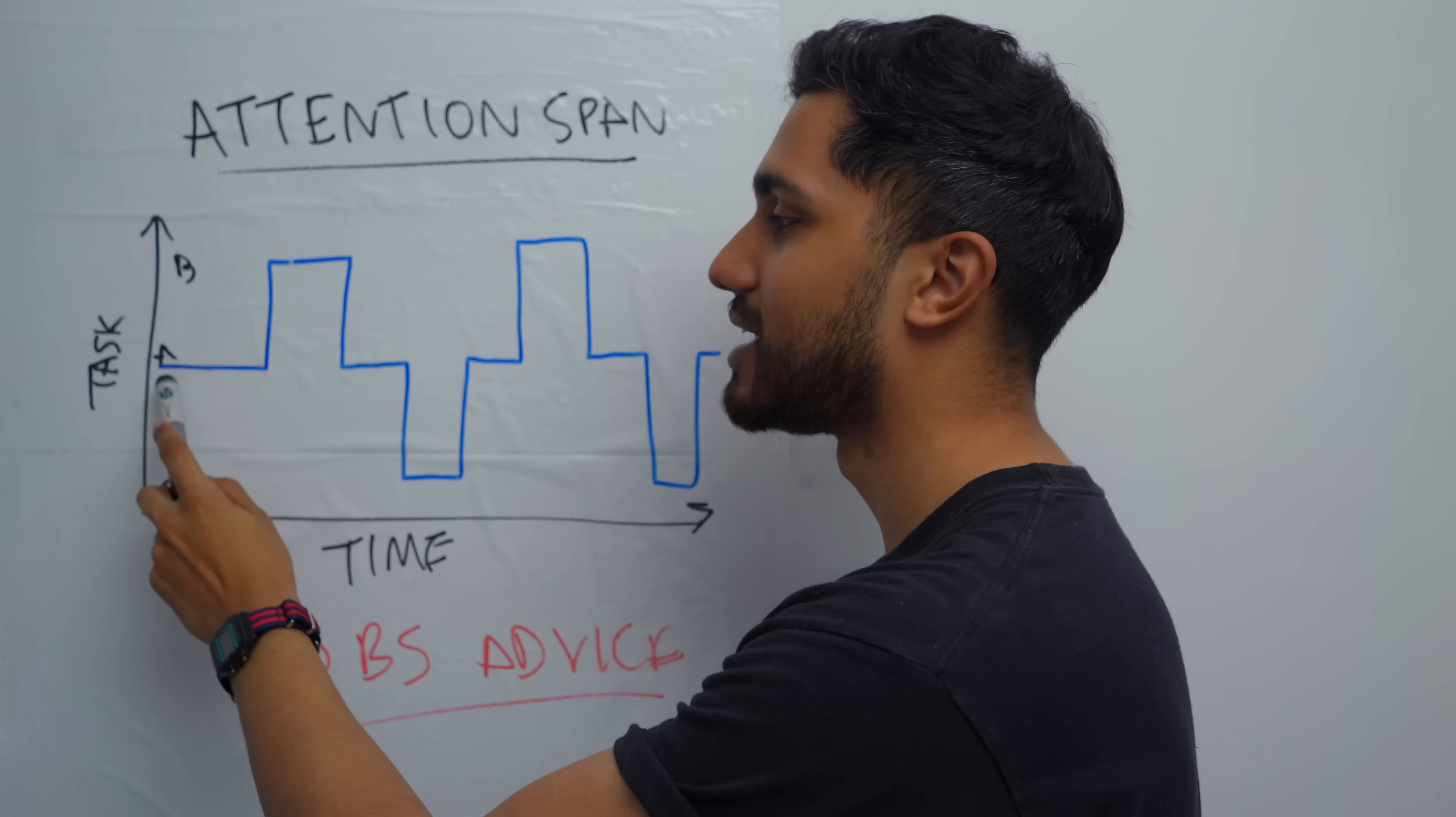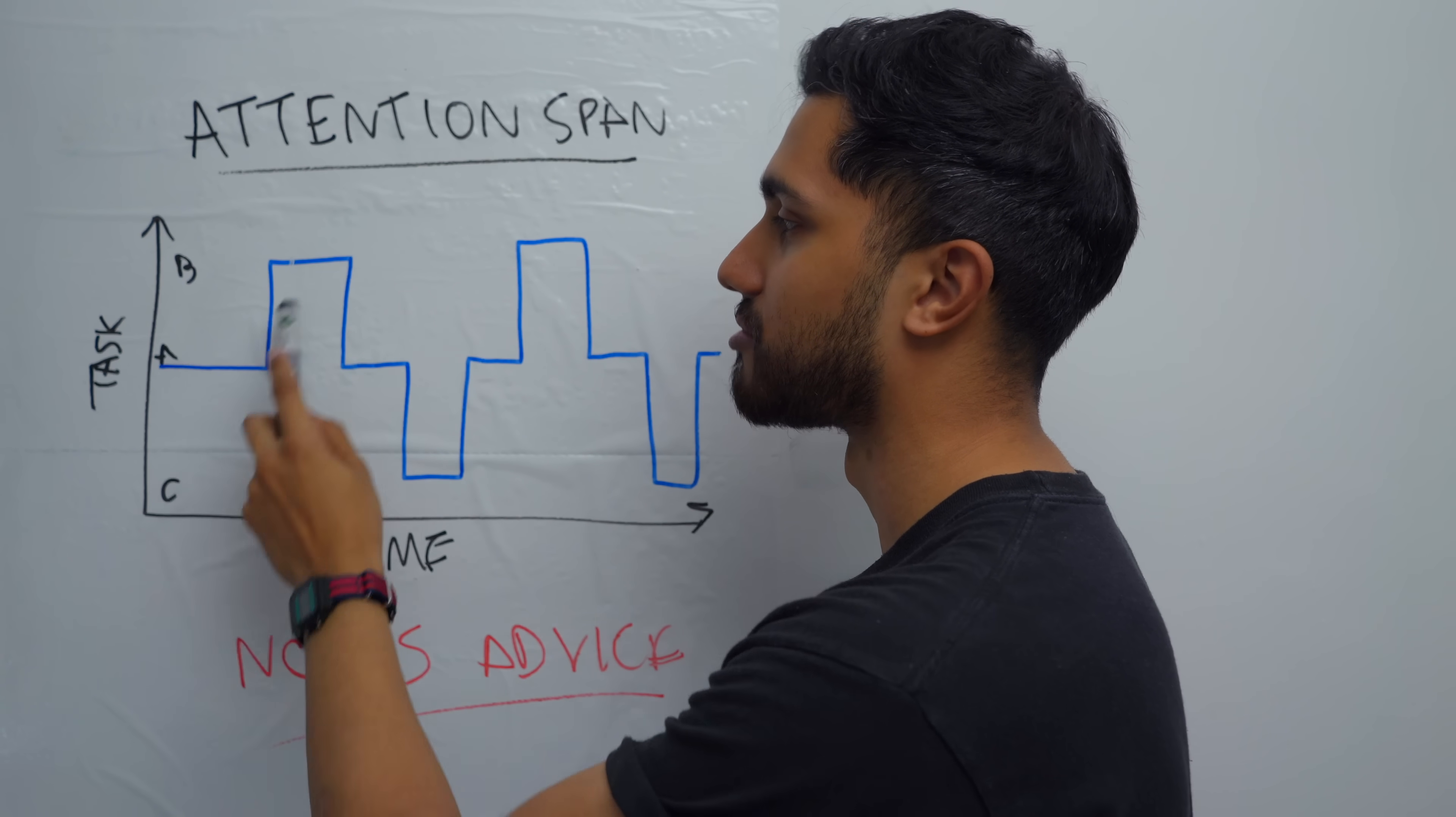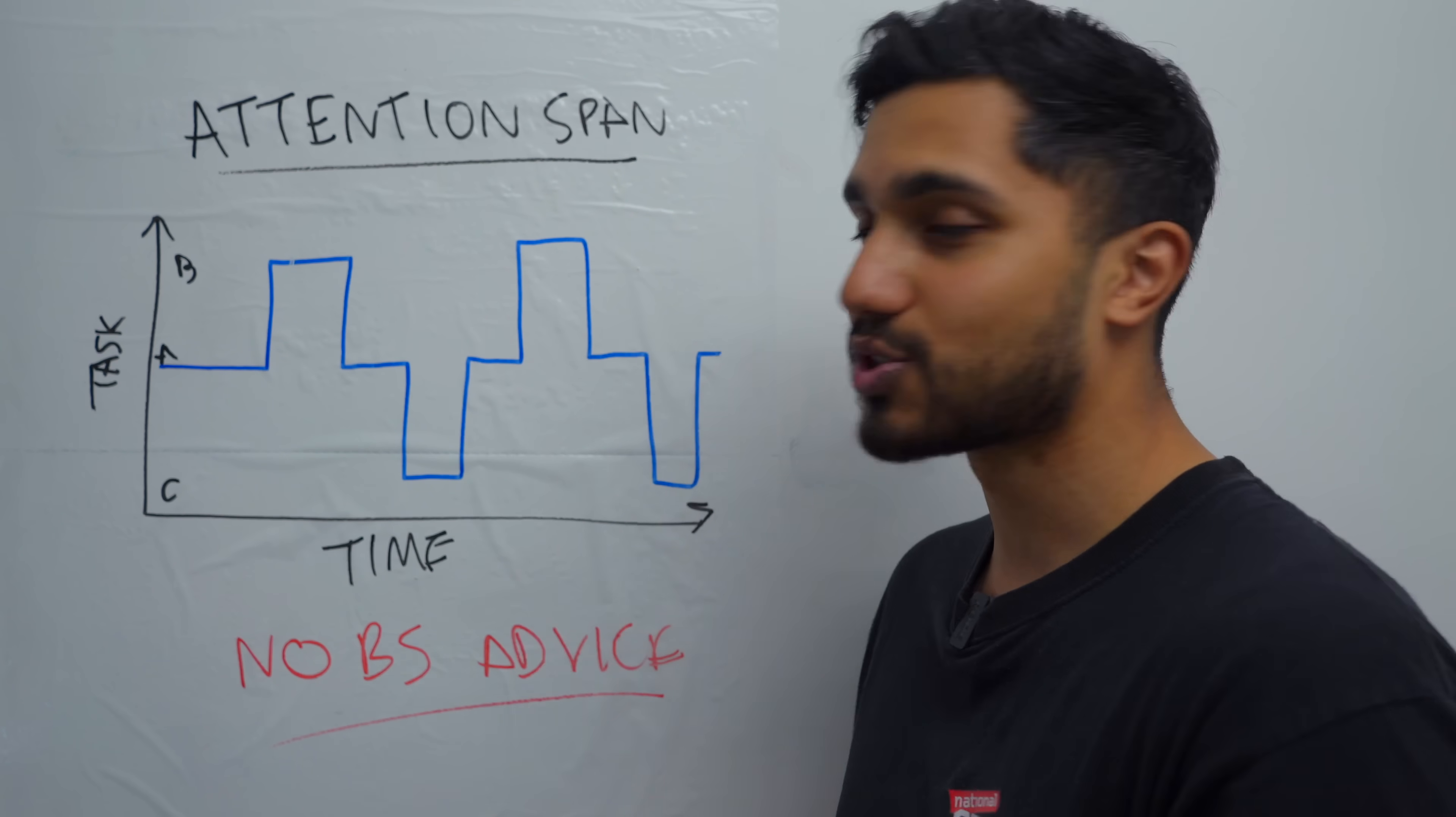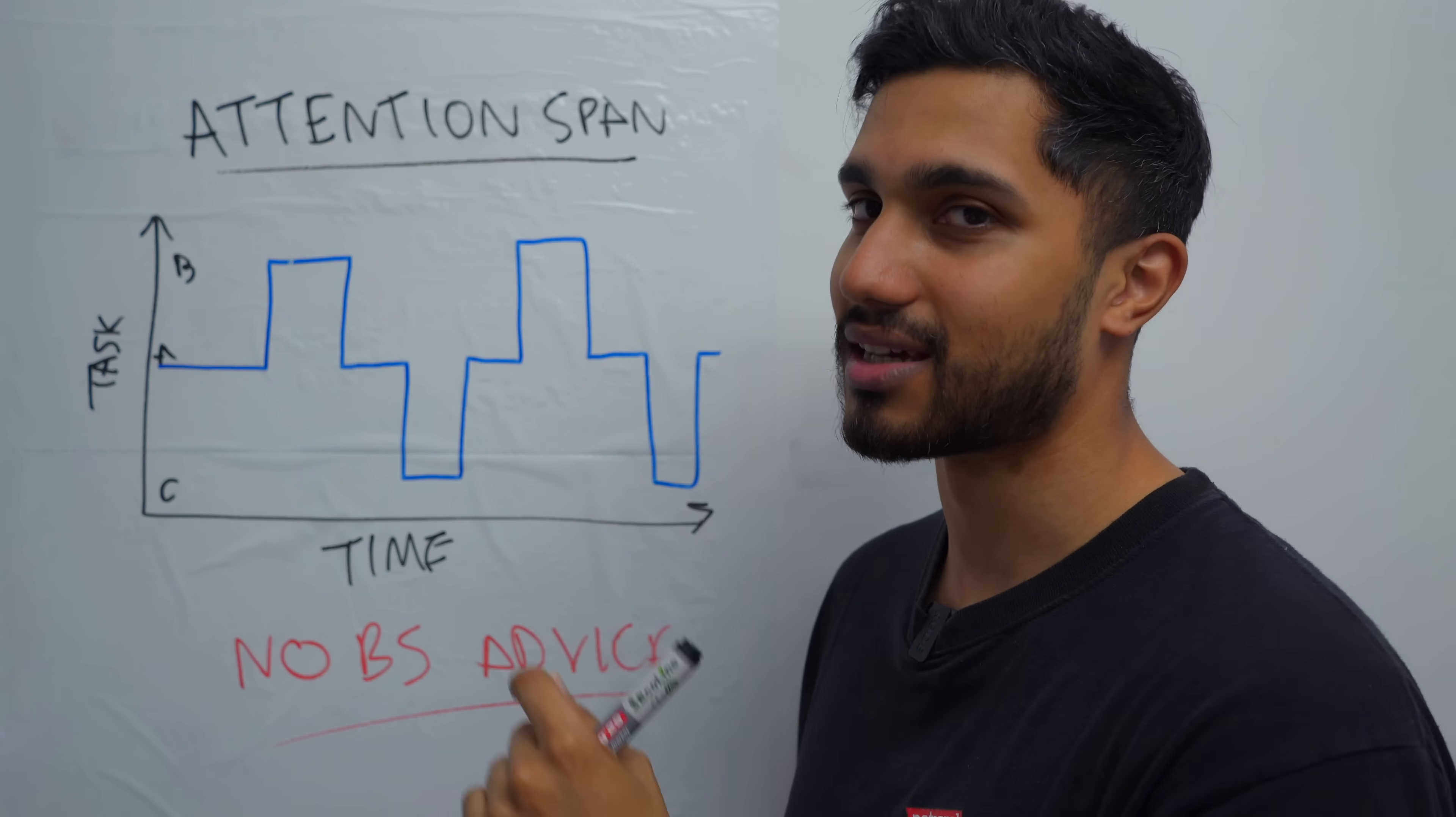So let's call this a bad attention span. So you intend on doing task A but then you get distracted by task B after a little while for quite a long time. Then you get back to task A and whatever. And then eventually it gets to a point where the amount of time that you spent on task A, what you wanted to do, is actually quite small.